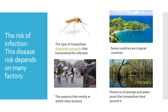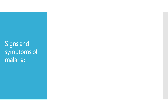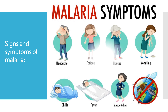The presence of swamps and water pools where mosquitoes live is another key factor. In adults, signs and symptoms of malaria include headache, fatigue, nausea, vomiting, chills, fever, and muscle ache, and may progress to confusion, coma, and death. In children, symptoms are similar but may also include anemia, respiratory problems, cardiac problems, or cerebral malaria.